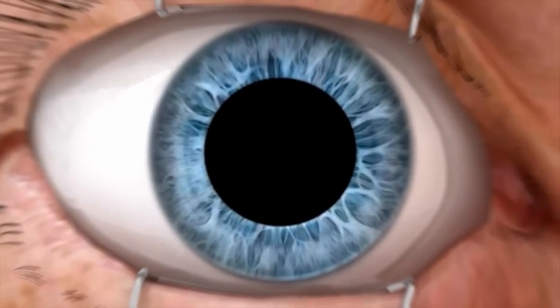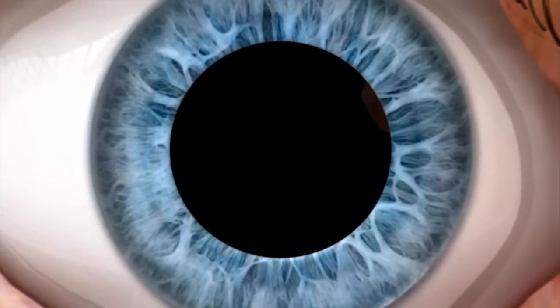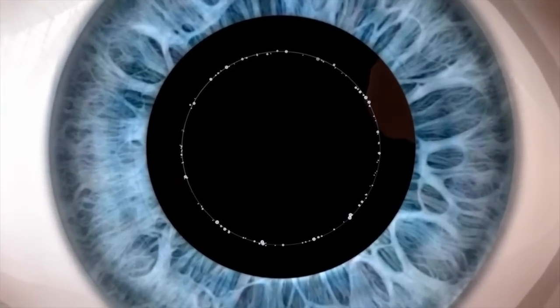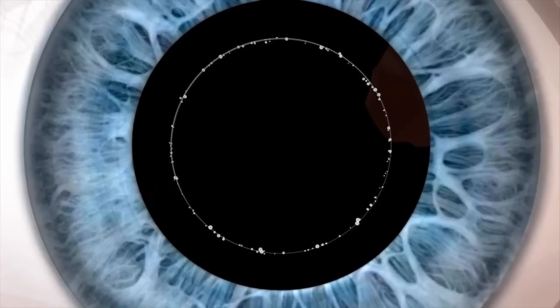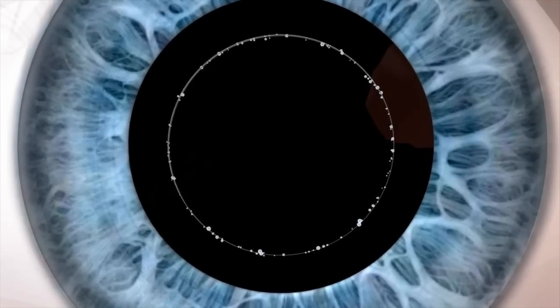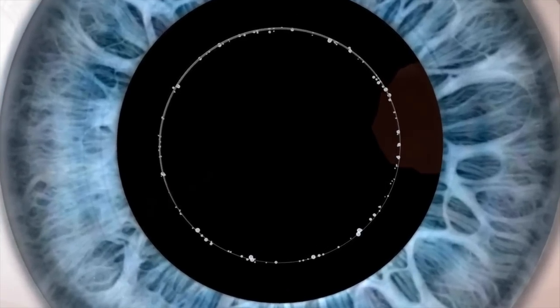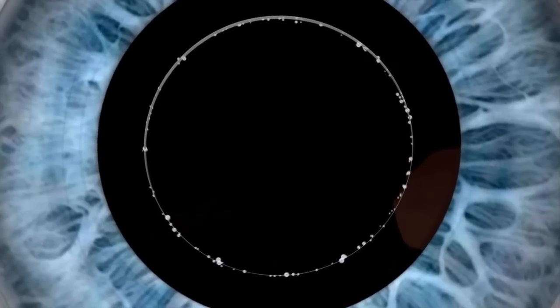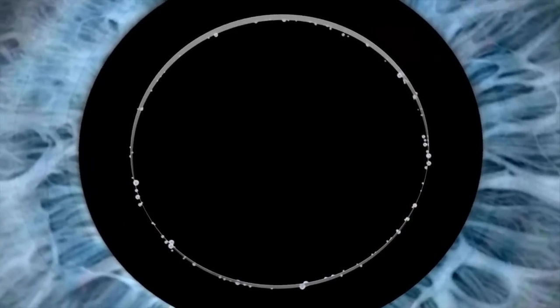First, the capsulotomy is performed, creating a precisely centered capsular axis. This is very important, as proper capsulotomy size has been shown to impact the effective lens position, a key parameter in IOL power calculations.